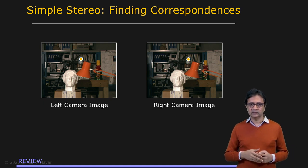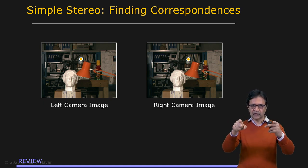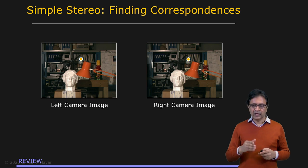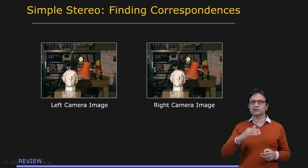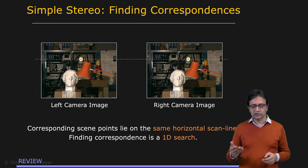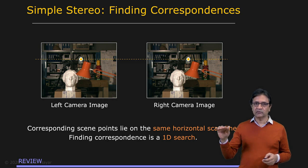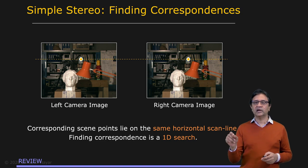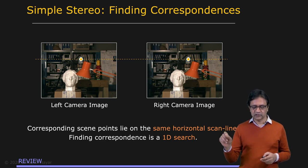In this very special case, where both the optical axes are parallel to one another, for any point in the left image, the corresponding point in the right image must lie on the same horizontal scan line, which is shown right here. In other words, stereo matching reduces to a 1D search.